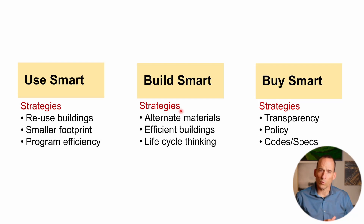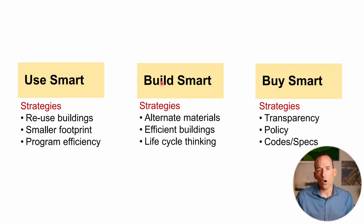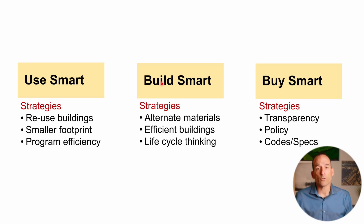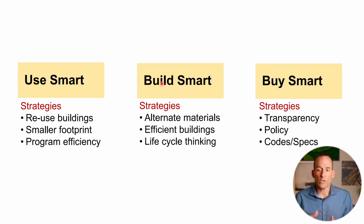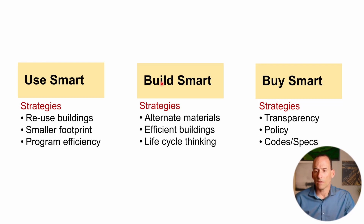How do we think about it when we build or remodel new projects? First, we're going to reuse buildings if we can. We're going to build with a smaller footprint and program them so we're efficiently using the materials we have. Then we're going to build smart — use alternate materials with lower embodied carbon, or materials with the same embodied carbon that are much more durable and won't need to be replaced nearly as often. That dramatically reduces the embodied carbon over time. Making more efficient buildings doesn't decrease embodied carbon, but it dramatically decreases operational carbon, reducing the lifetime carbon of that building.